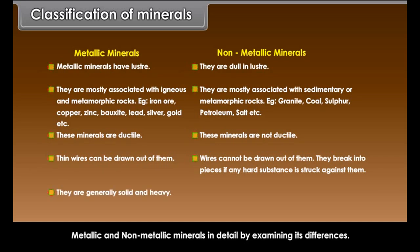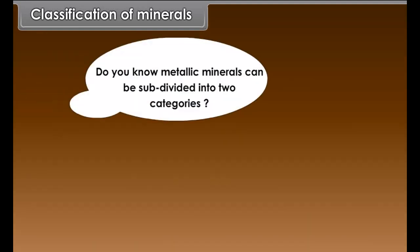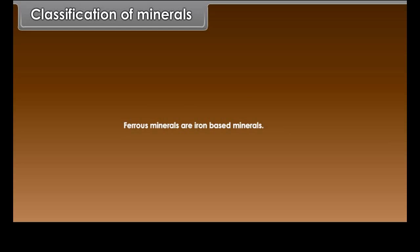Metallic minerals are generally solid and heavy. Non-metallic minerals are neither solid nor heavy. Some of them are found in liquid as well as gaseous state also. Do you know metallic minerals can be subdivided into two categories? Ferrous and non-ferrous minerals. Ferrous minerals are iron-based minerals, for example, iron.